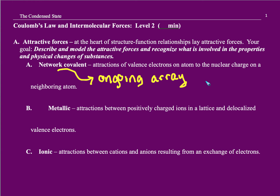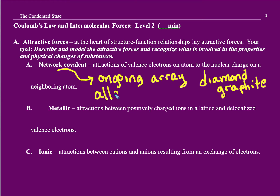Things to think about to get a picture in your mind are diamond — that's pure carbon — and graphite. Those are allotropes. Especially if you are in IB chemistry, you should know that word: same element, different structures. Allotropes. Sand is silicon dioxide, or a series of silicates, but they're covalently bonded.